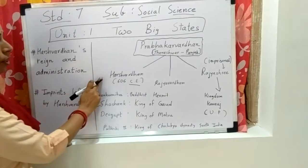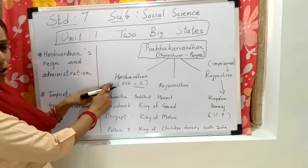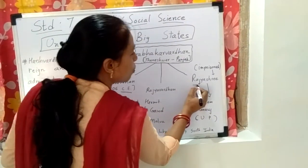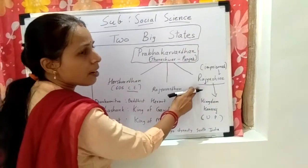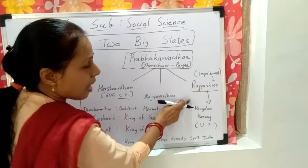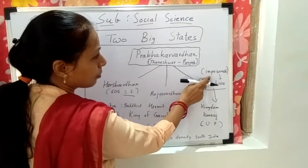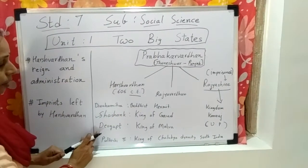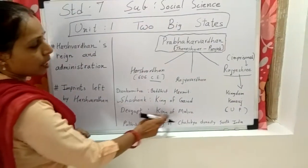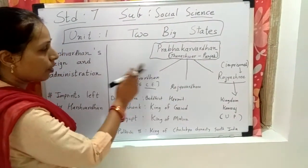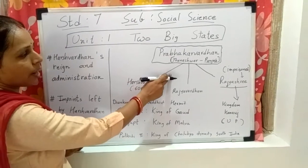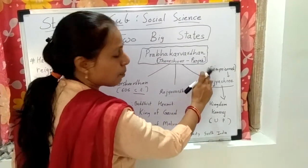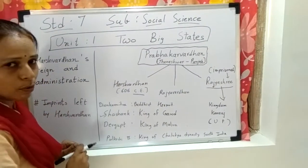After he became the king of Thaneshwar, Harshvardhan decided to free his sister Rajashri. His sister Rajashri was imprisoned. She was kept in prison by Devgup, the king of Malwa. Harshvardhan decided to free his sister from the capture of Devgup.